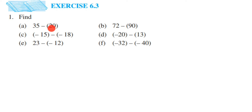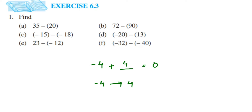What is the additive inverse? Suppose I have the number minus 4. What should I add to minus 4 to get the answer 0? If I add 4 to this, I will get 0. Both numbers have opposite signs but the same value — when you add them, they cancel each other out and we get 0. So the additive inverse of minus 4 is 4: same number, opposite sign.